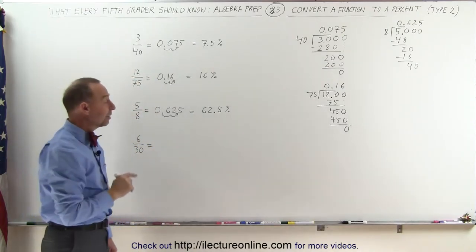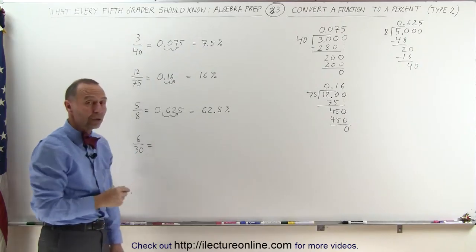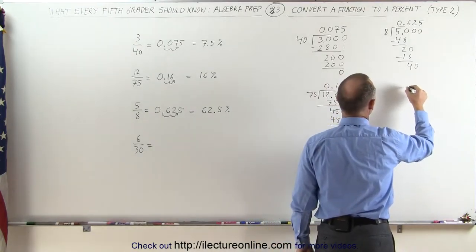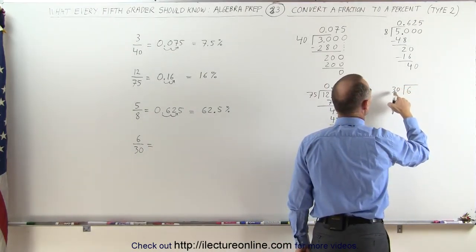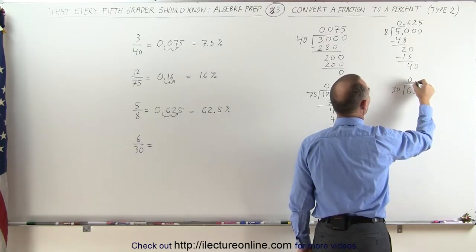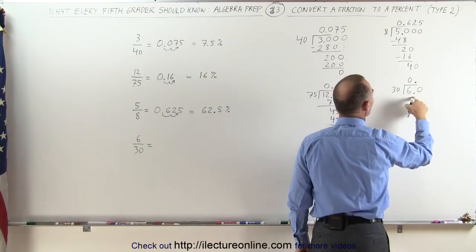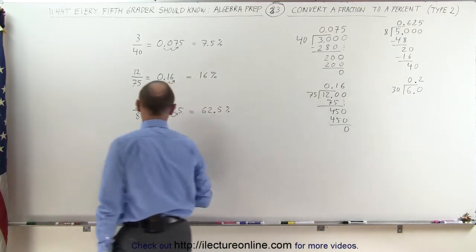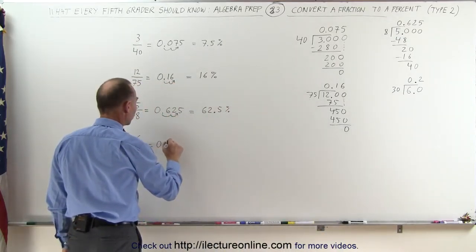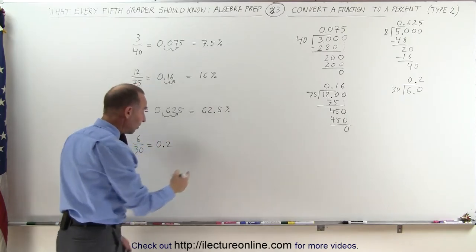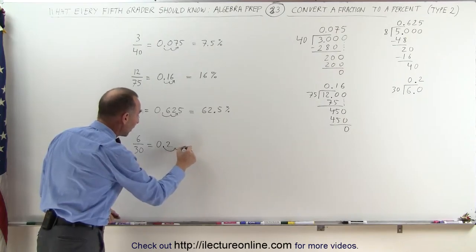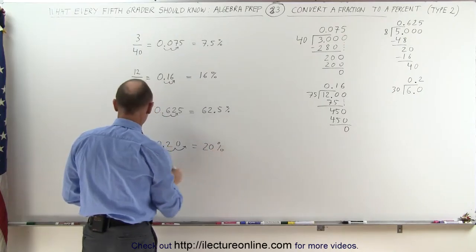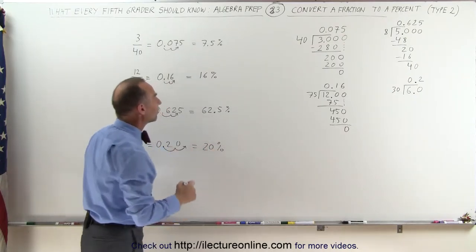And finally we have something a little different: 6 divided by 30, or 6 thirtieths. What is that as a percent? The technique is the same. We take the numerator 6 and divide it by the denominator 30. 30 goes into 6 zero times. Decimal place there, decimal place there. Then we add a 0. 30 goes into 60 — 2 times. So 6 divided by 30 can be written as 0.2. To turn into a percent, we move the decimal place over two spots and put a 0 there. So this is equal to 20%. 6 over 30 is the same as 1 fifth — it's the same as 20%.